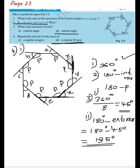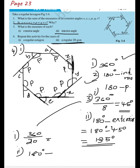You can do the same for a regular 20-gon. The first and second answers are the same. For the third question, instead of dividing by 8, divide 360 by 20 to get each exterior angle. Then subtract that from 180 degrees to get the interior angle. This is the answer for Try This page 23. I hope you understood. Thank you.